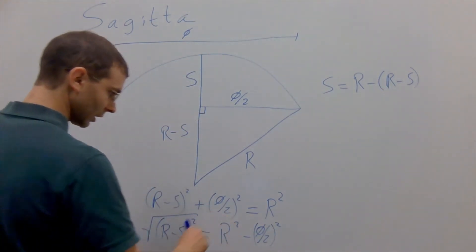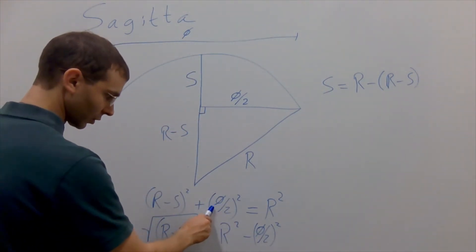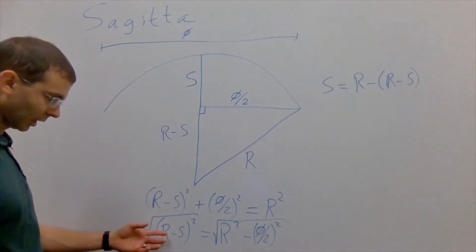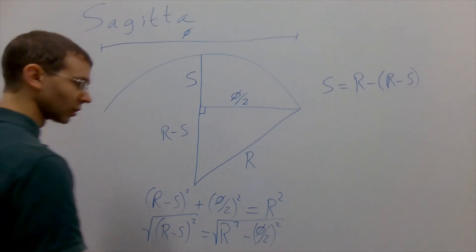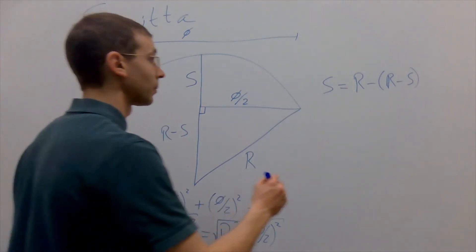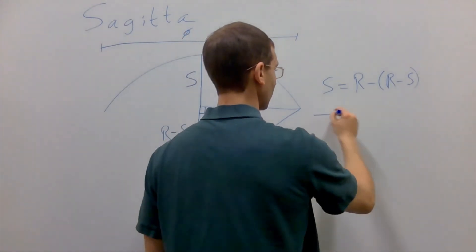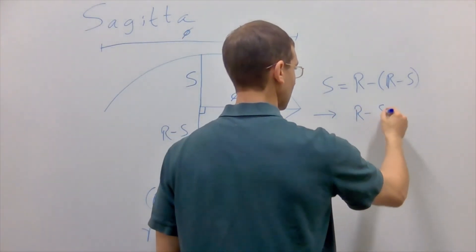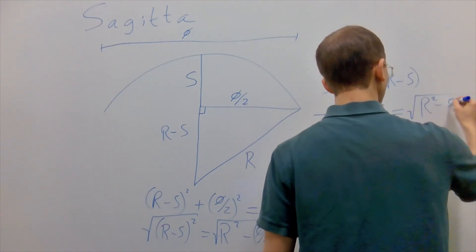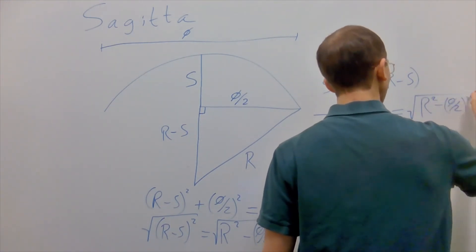All right, so I've moved that side over. I subtracted this from both sides, and now I'll take the square root of both sides. Since we're dealing with a length here, these literally do cancel each other and give us that r minus s equals the square root of radius squared minus phi over 2 of the quantity squared.